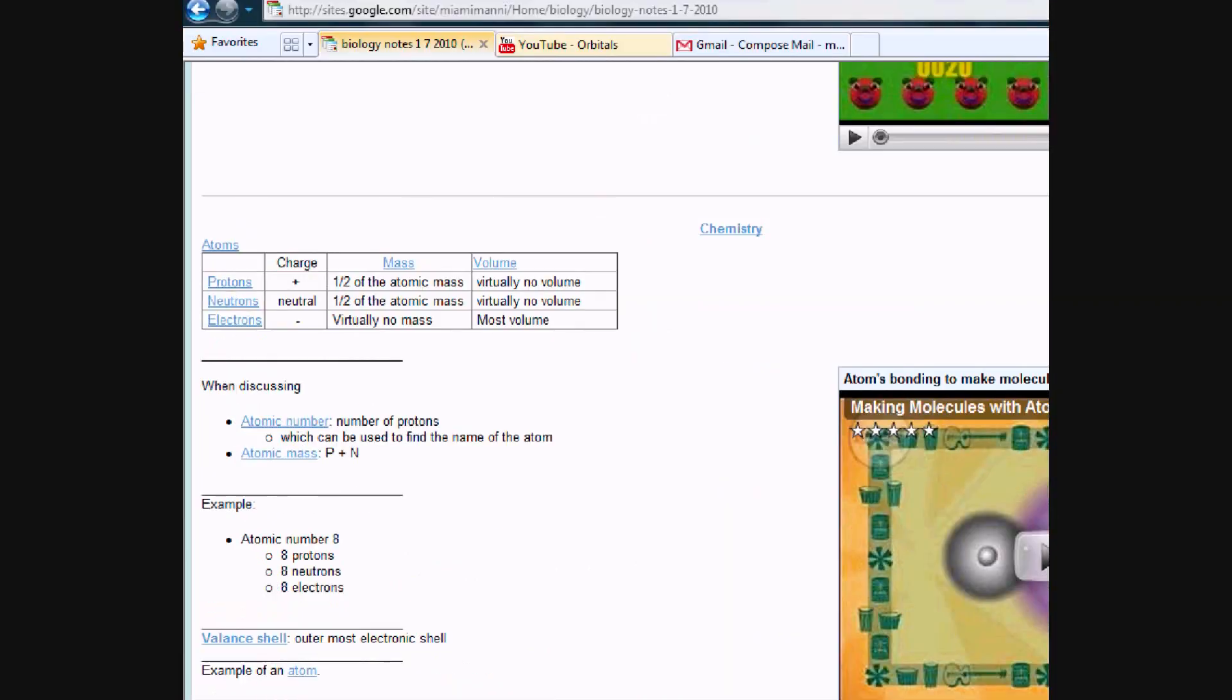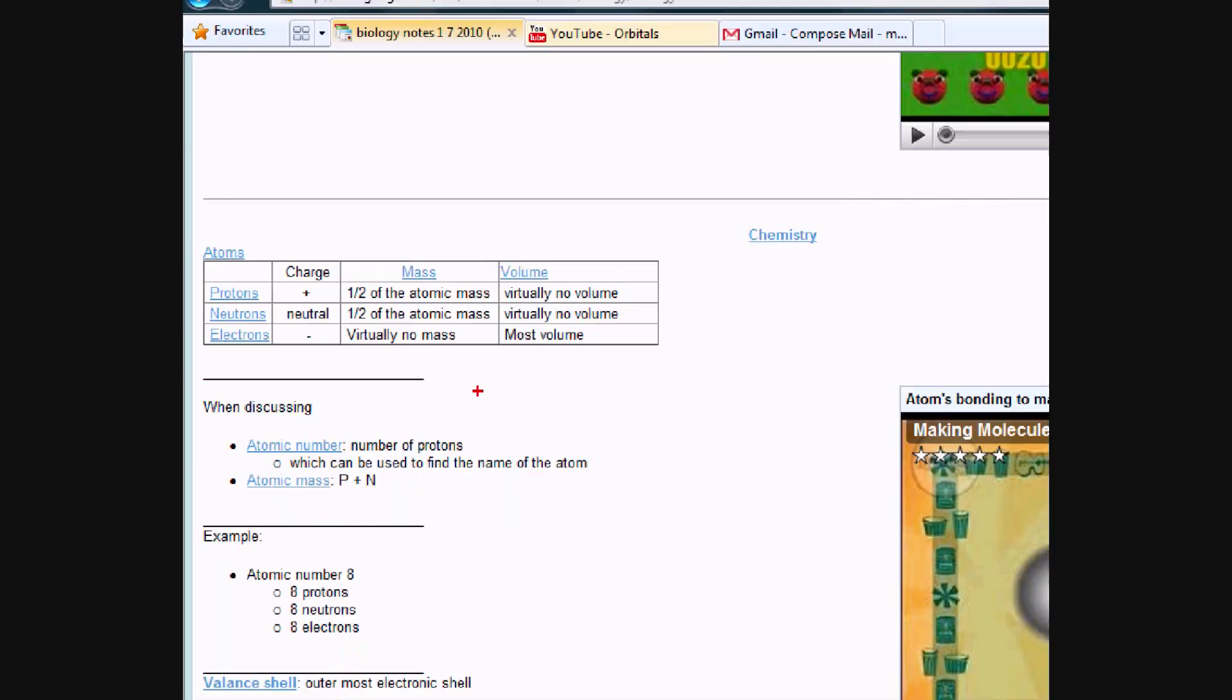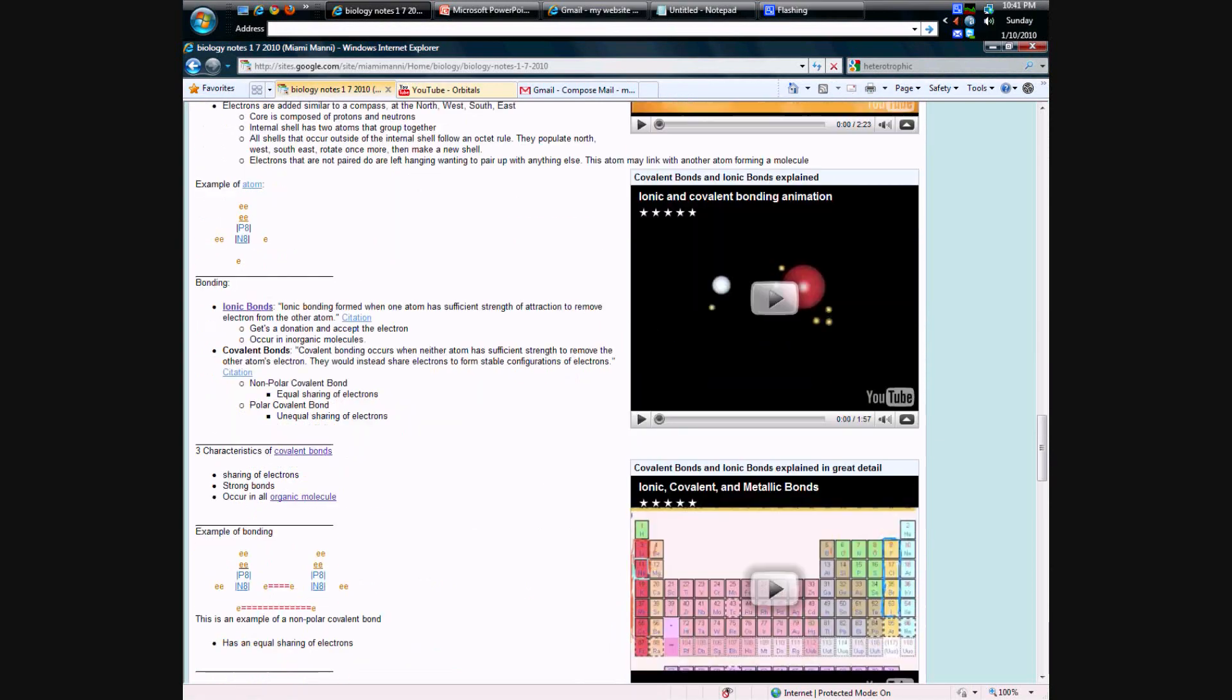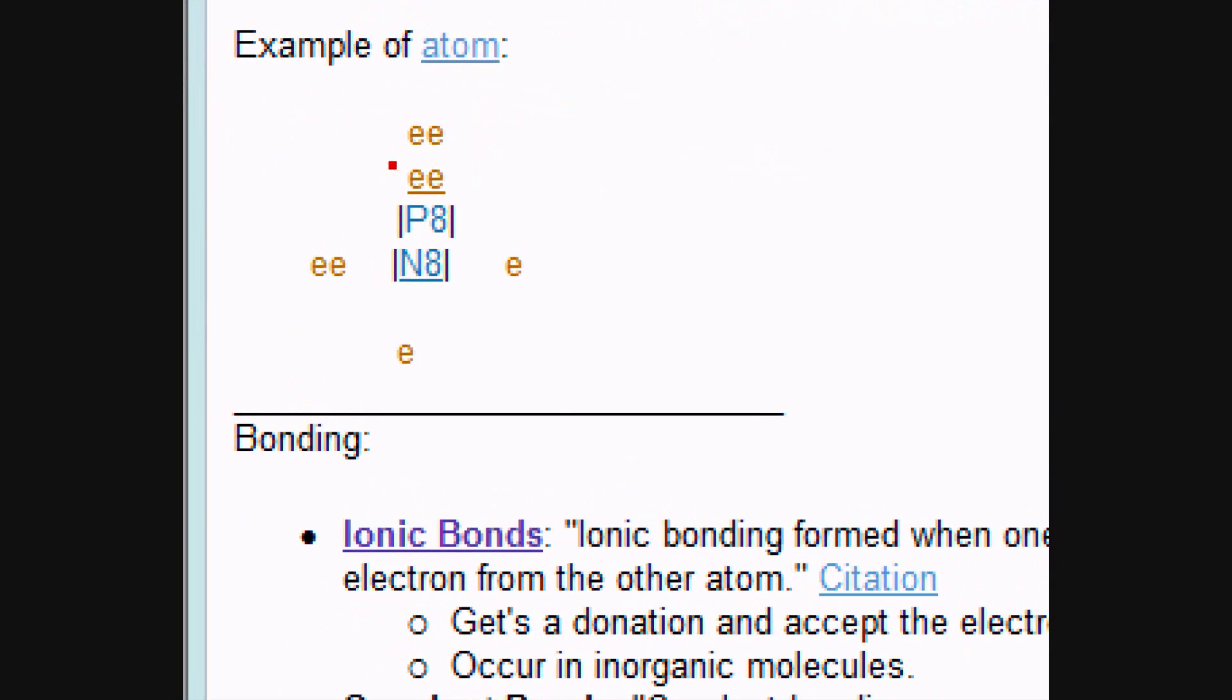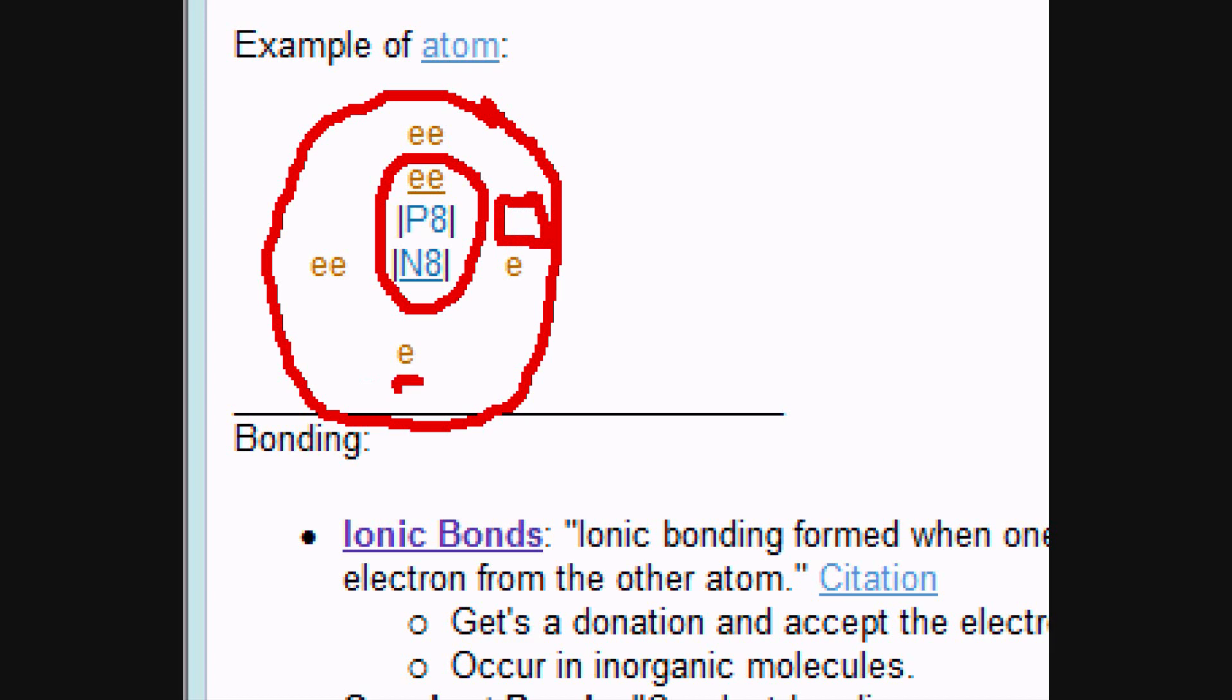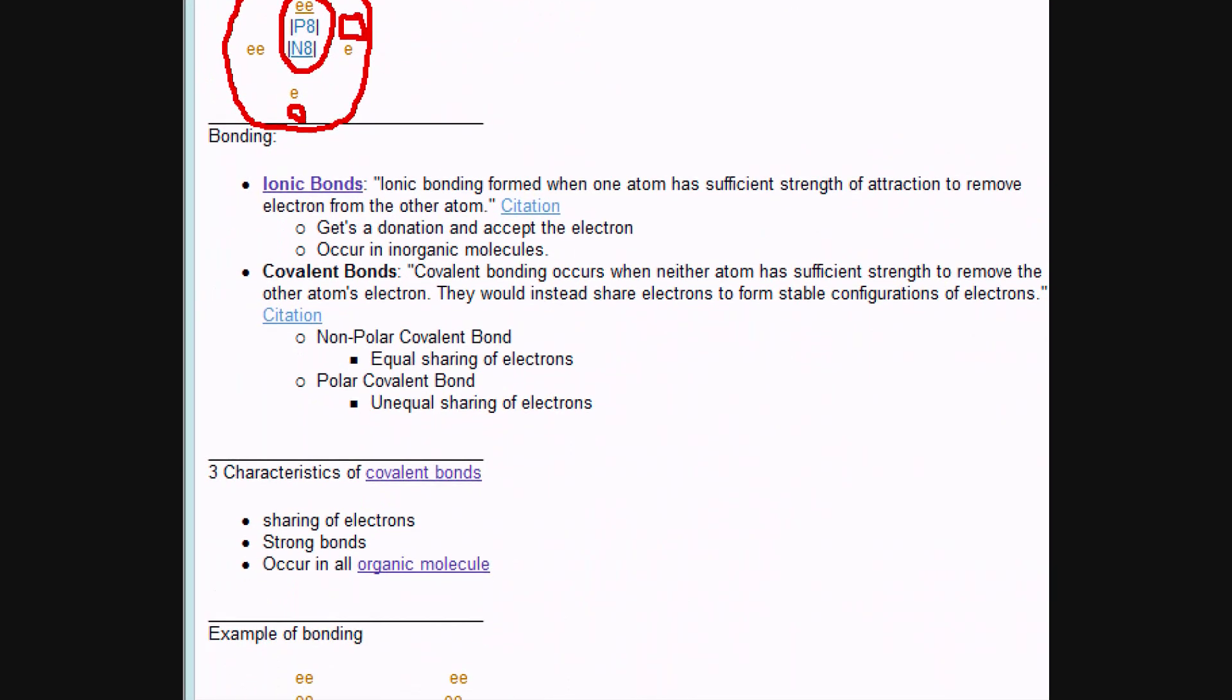We've already gone through this basic table that I drew out between the charges and the atomic masses and the volumes, and I already took you through an introduction on how to draw the atom. This represents the innermost shell, and this is the valence shell, with two slots open for electrons to take refuge.